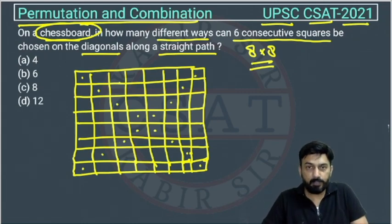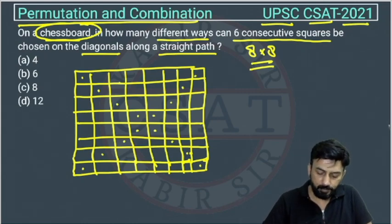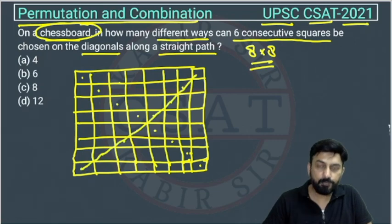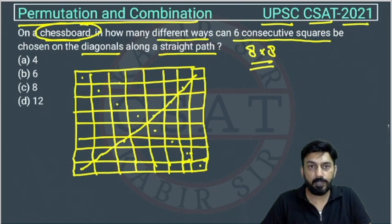Right, so now out of these, one by one we will take, like suppose for this one. So we have 8 squares. So out of these 8 squares, we have to select 6, and these 6 should be consecutive.